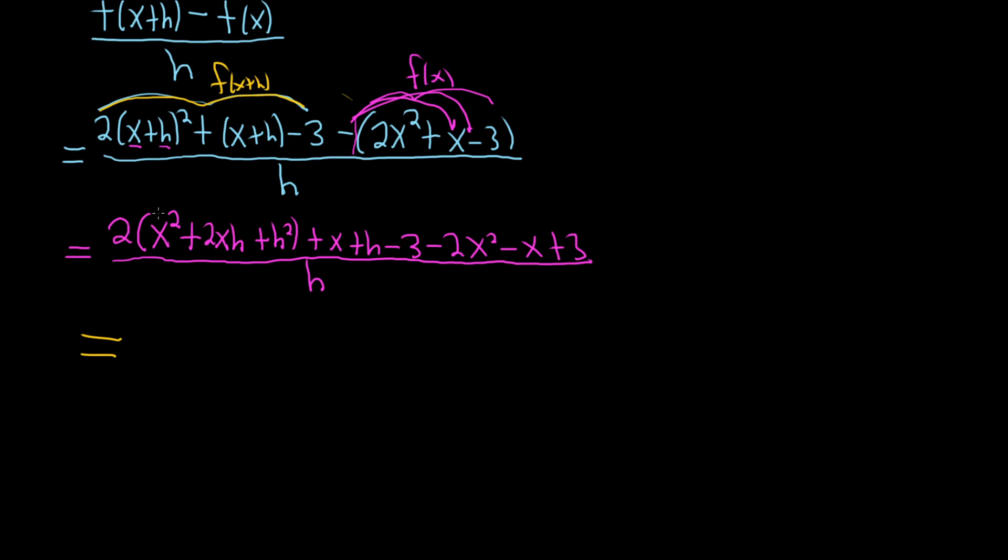Let's distribute this 2 here. So 2x squared, that's that times that. That times that would be 4xh. 2 times 2xh is 4xh. And then 2 times h squared would be 2h squared.